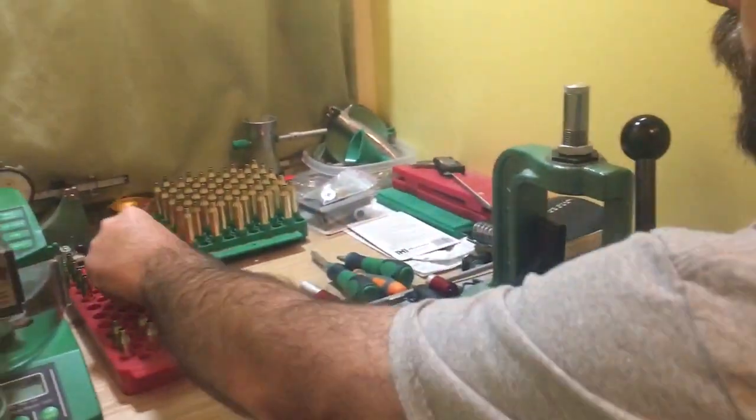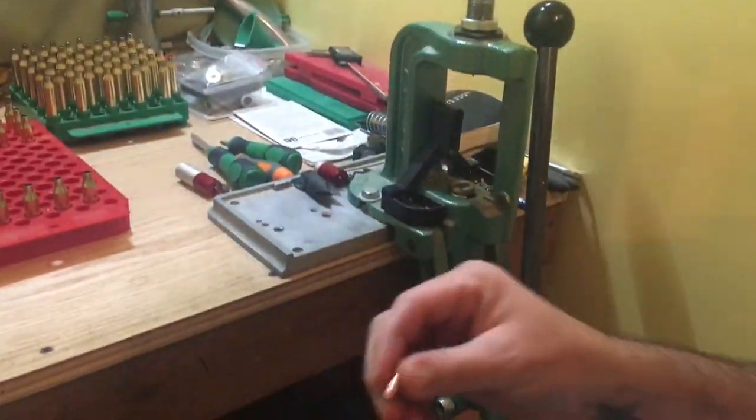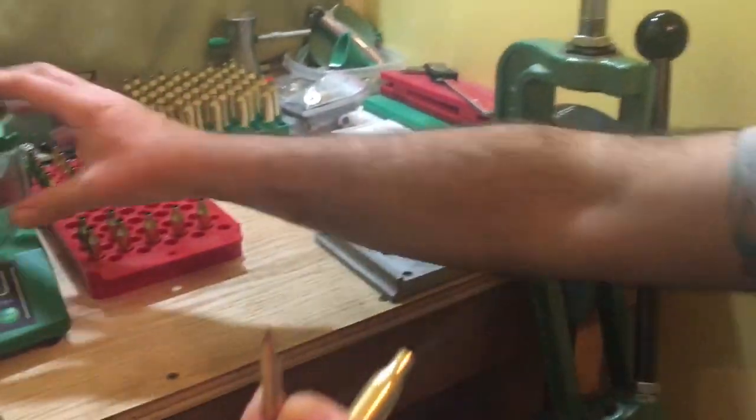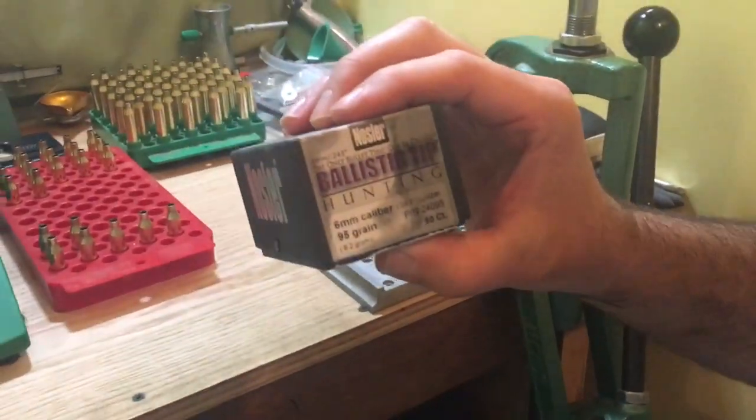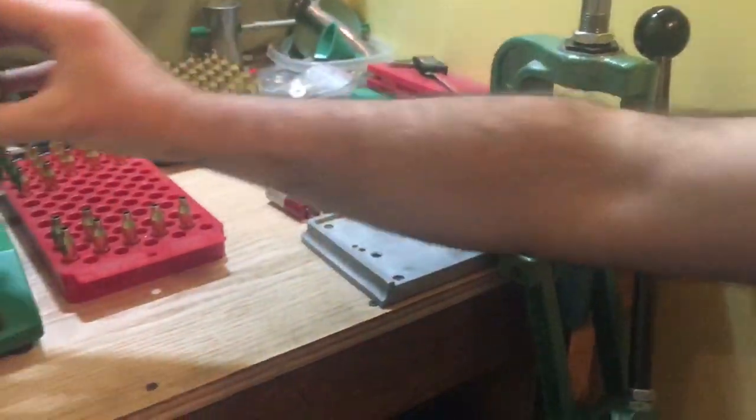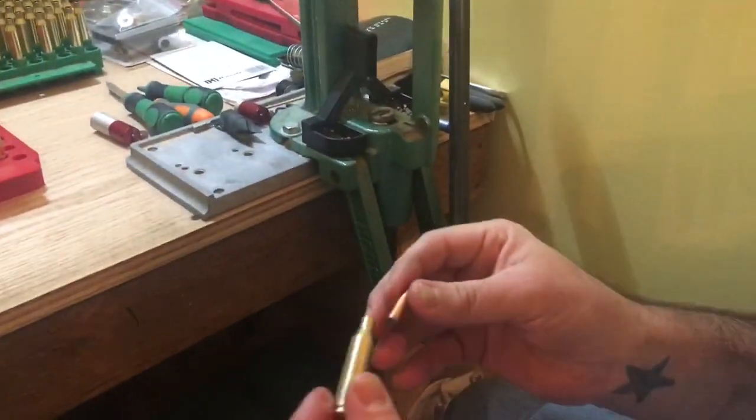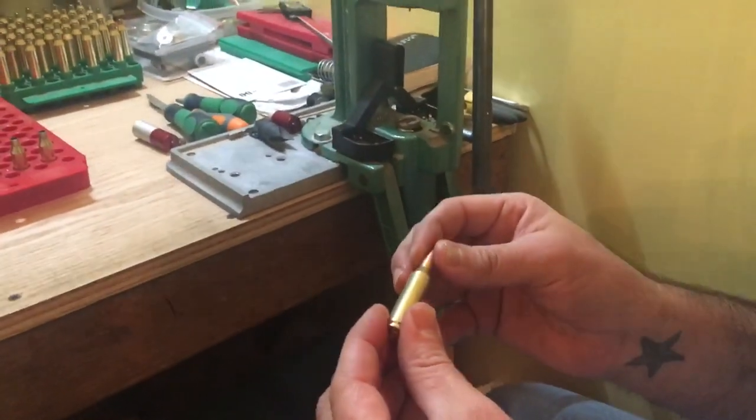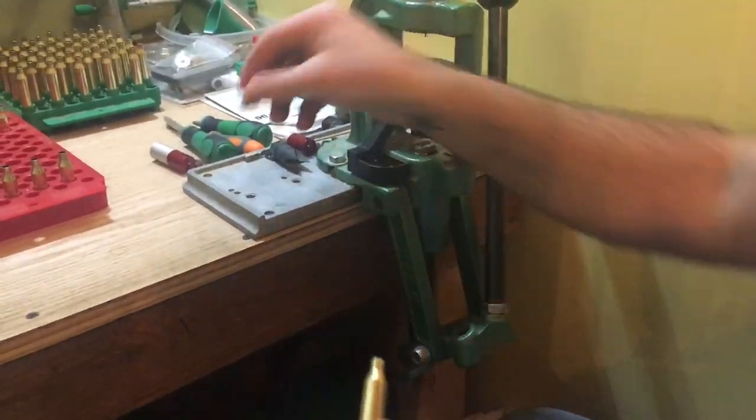So let's take a case here. I've already done a few here. Got a piece of 243 brass. Here's a bullet. This is 95 grain Nosler Ballistic Tip. Really like those, good bullets. You can see right here this case has not been sized or decapped anything. So you can see that bullet slides pretty freely.